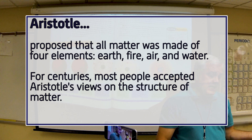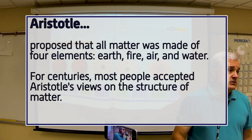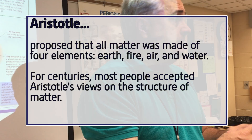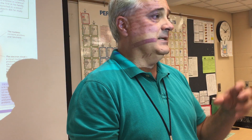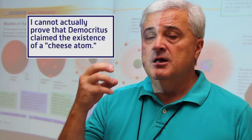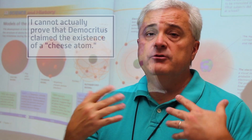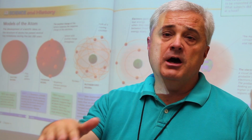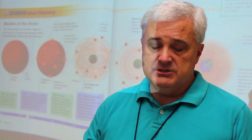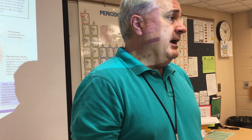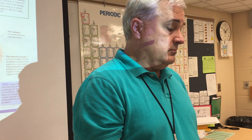So on one hand we have Democritus, who thinks all matter is made of atoms and that every substance had a uniquely different atom — a cheese atom, a water atom. Then we have Aristotle, who by virtue of his popularity had his view catch on more. He said everything was made of these four elements in different combinations. Aristotle's view went on for literally centuries.